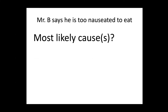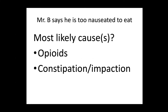Mr. B says he's too nauseated to eat. Given what we know about him — he's on an opioid and he's constipated — those are the probable reasons for nausea. Opioids cause nausea as a side effect in roughly 30% of opioid-naive patients. The important thing to tell patients and families is that tolerance develops to that side effect in about three days. Many patients say they're allergic to morphine because they vomited — they're not allergic; it's a predictable side effect that will pass as the body learns to metabolize the drug. Constipation and impaction are also contributors, particularly when they lead to bowel obstruction.